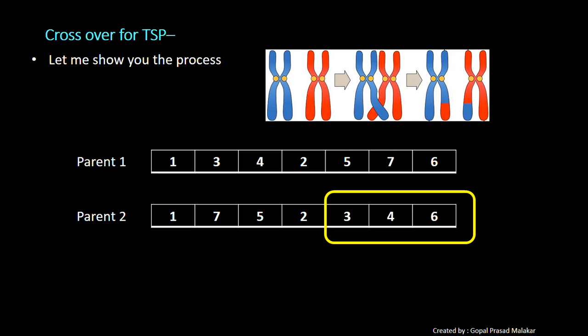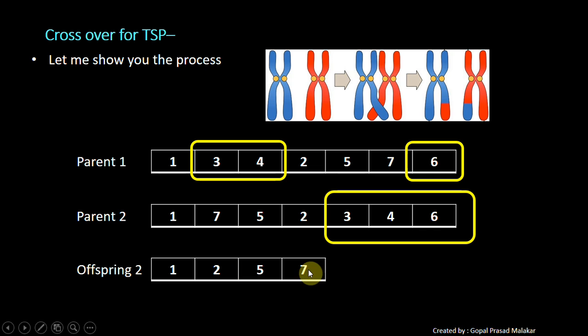Similarly, we can do for the other part also. Suppose you have taken 3, 4, 5, 6 here. You remove 3, 4, and 6 from 1, 2, 5, 7 string and you will put it in some order like 4, 6, 3. This is another valid offspring. So from 2 chromosomes, 2 parents, you get 2 offsprings.